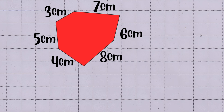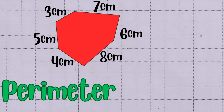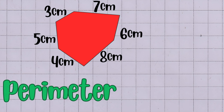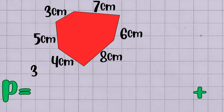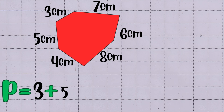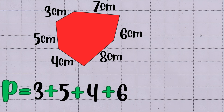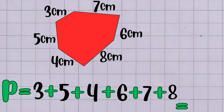To find the perimeter, we add all six side lengths together. When we add three centimeters, five centimeters, four centimeters, six centimeters, seven centimeters, and eight centimeters, the total is 33 centimeters. So the perimeter of this irregular hexagon is 33 centimeters.